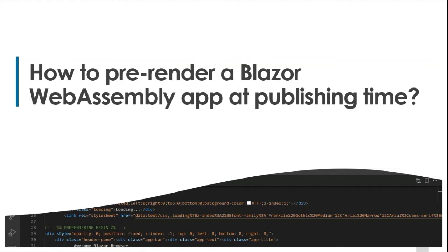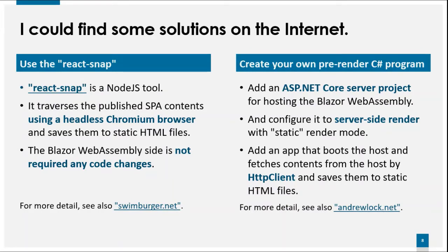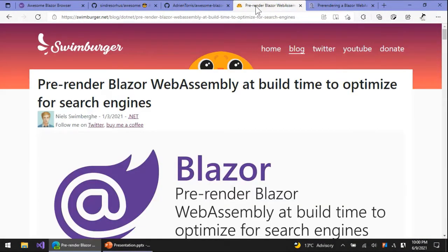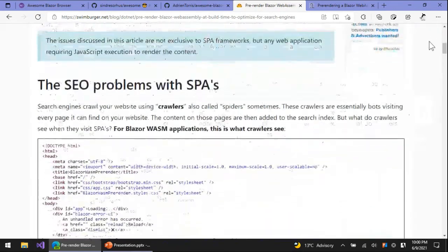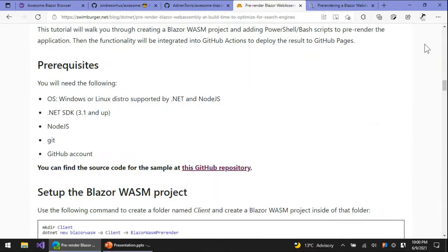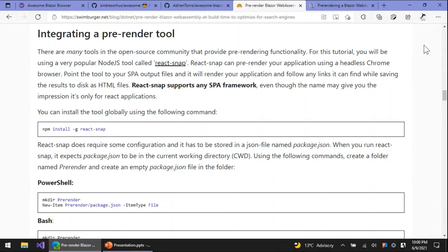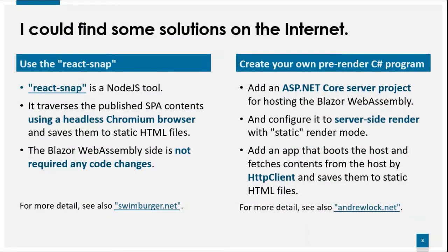Let me show two resources I found. One is an article by Swinburg. He explained in his blog post how to pre-render using React Snap. React Snap is a Node.js tool that launches its own local web server to serve the SPA published folder via HTTP, and it launches a headless Chromium browser. React Snap starts accessing its own web server through that headless Chromium browser, gets the DOM contents the browser rendered, and saves those contents into static HTML files. This approach is straightforward and robust. The project also doesn't require any code changes.